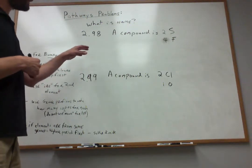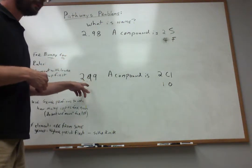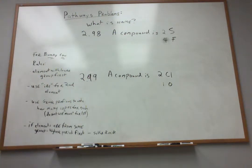Okay, let's work with a couple pathways problems, 2.98 and 2.99, because both of these deal with a similar concept, and that is all about naming so-called binary covalent compounds.